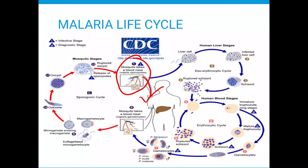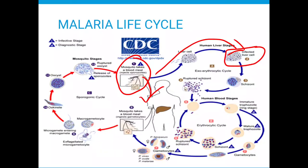Once the sporozoites are injected into the human being's blood, they need to mature into a state known as merozoites, because it is in the merozoite state that they are able to penetrate the red blood cells. This maturation from sporozoites to merozoites can only occur inside the liver. As a result, the sporozoites enter blood circulation and infect the liver cells. Inside the liver cells, the sporozoites divide into segmented states known as schizonts.